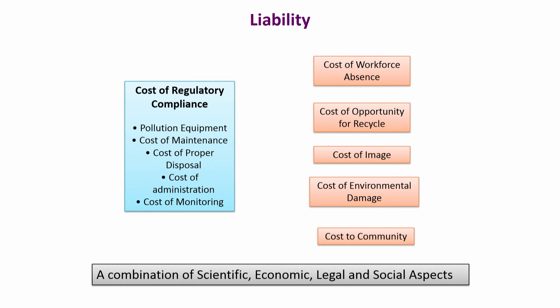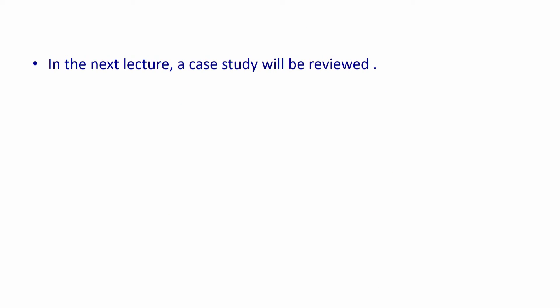Liability is a combination of scientific, economic, legal, and social aspects — and the scientific is only one part of it. One of the things people have to keep in mind is all these other factors when designing a process or a product in a particular corporation. In the next lecture we will review a case study in which some of these issues will come up again, and you will see an application of these concepts in a scenario relatable to the lectures we have had so far. Thank you.